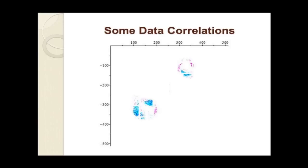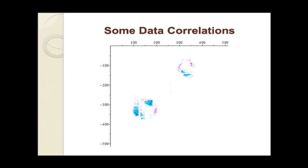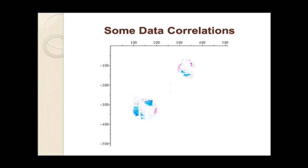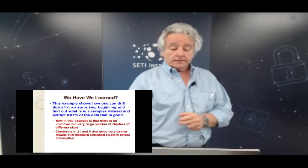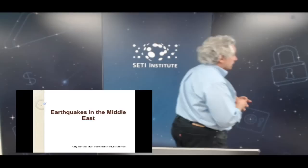Showing a few clusters in the same plot demonstrates correlations between different momenta — exactly what you were looking for for coherent excitation of the sample. You can do a detailed point-by-point correlation study having separated out the good data. This example shows you can drill down from a surprising beginning, find out what's in the data set, and extract the 0.87% of the data you want to work with. Normal algorithms would never assume there are 669 clusters — the number of clusters is what the data says is there, not what we guess at the outset.